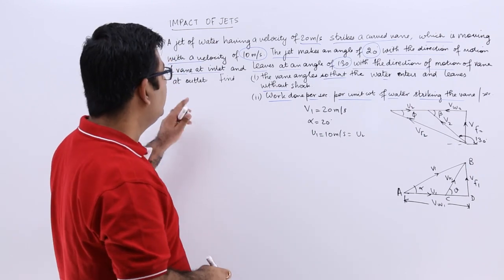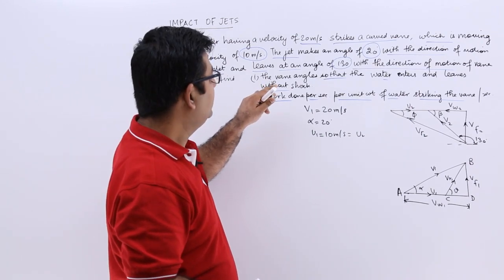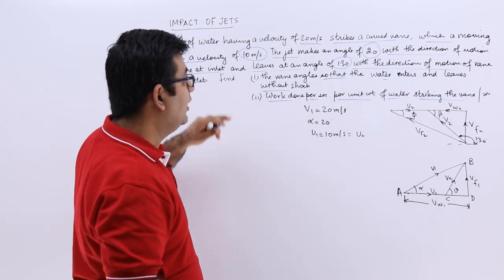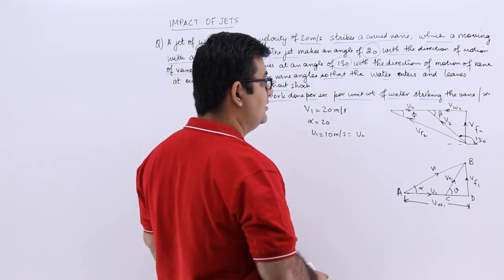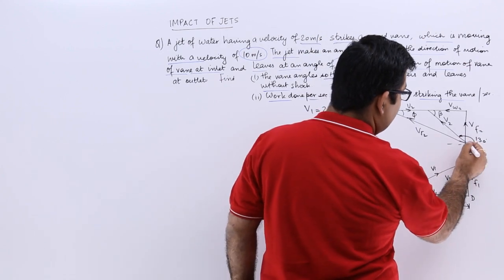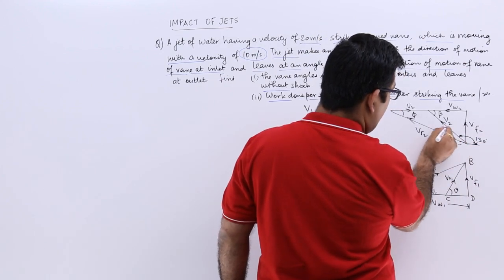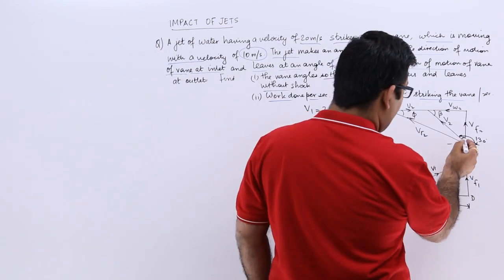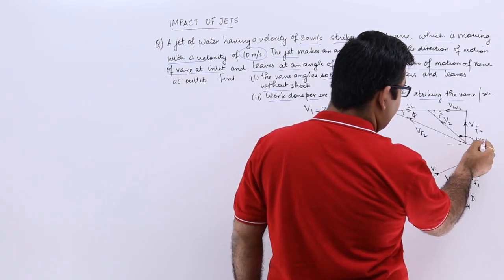Now the angle at the outlet of the vein with the direction of the motion is 130. This is the direction of motion, this is the outlet velocity of the jet, and the angle between this line and this line is 130.